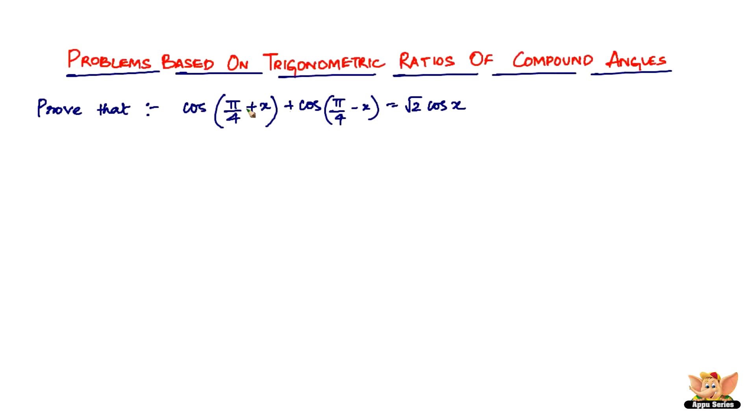So if this is cos a plus b, what is cos a plus b? Cos a plus b is cos a cos b, right? So cos a is cos pi by 4 and then cos b is cos x and then minus sin a sin b.